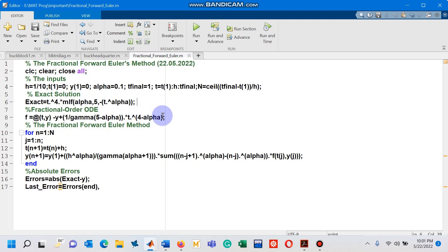The differential equation we are given is minus y plus 1 upon gamma 5 minus alpha times t to the power 4 minus alpha. On line number 6 you can see its exact solution, which is t power 4 times Mittag-Leffler function of 2 parameters.